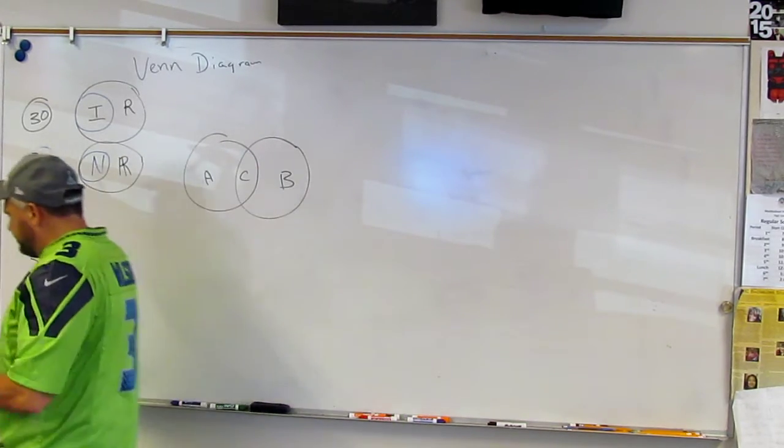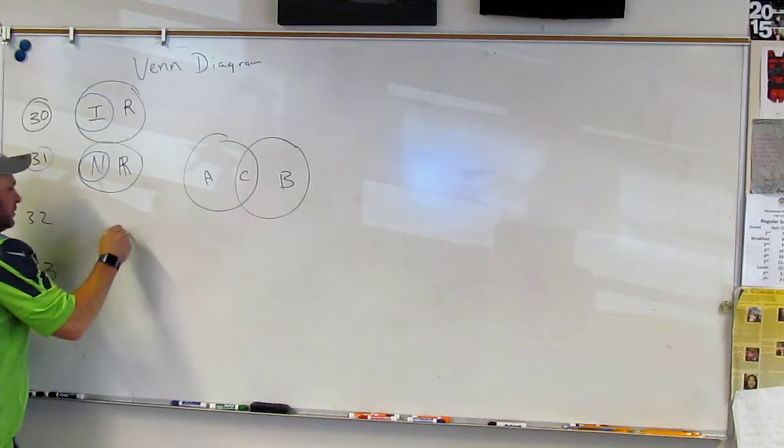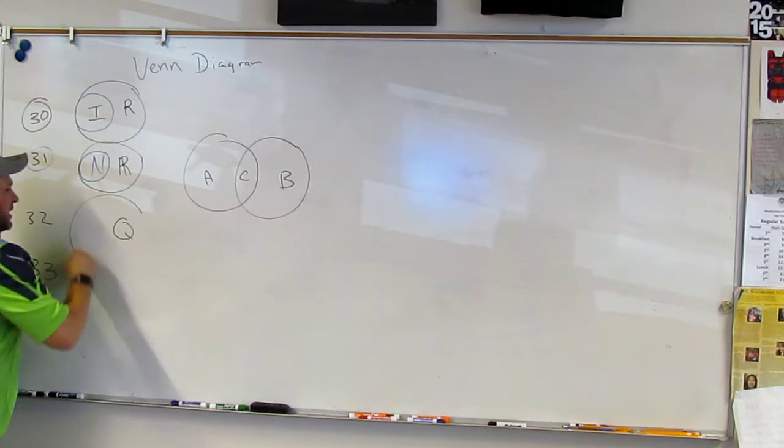32. All rectangles are quadrilaterals. Quadrilaterals are every single possible four-sided figure. Right? That's a quadrilateral. So that's a lot.